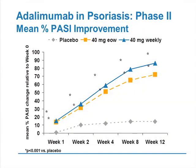The response to adalimumab shows a very rapid improvement in PASI score. By week 12, if you use adalimumab every week, you see approximately 80% improvement in PASI score. If you use it every other week, you see an almost 70% improvement. Adalimumab is started with a loading dose of two injections on the first day, the next injection is given a week later, and then patients are treated either every week or every other week.